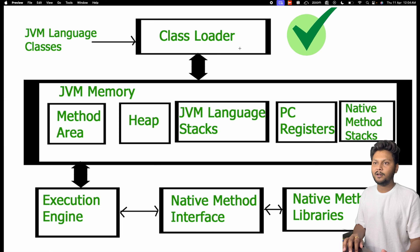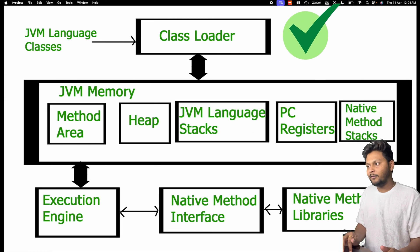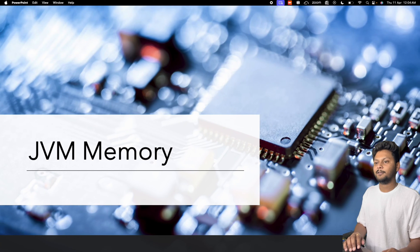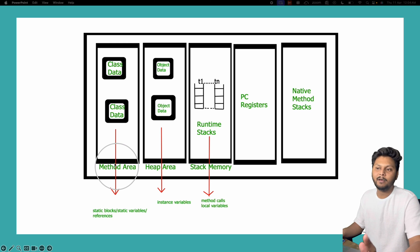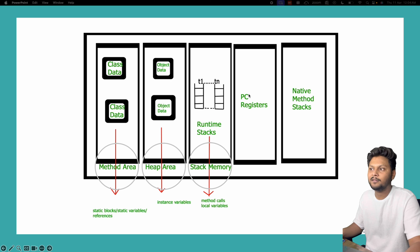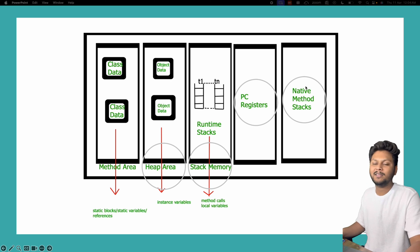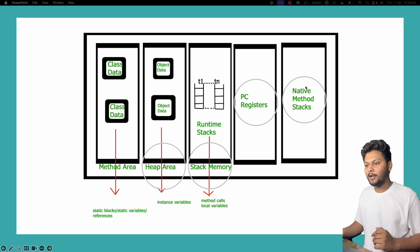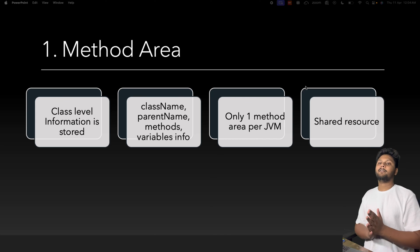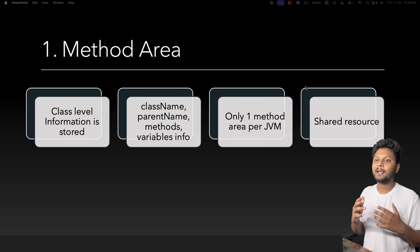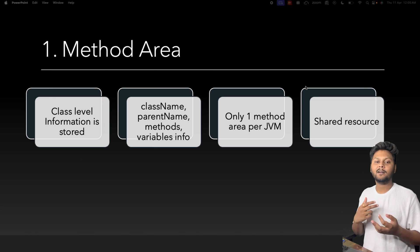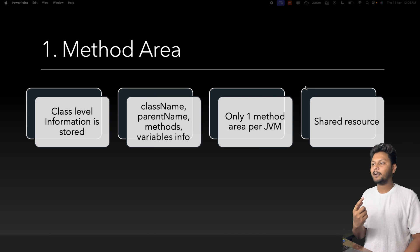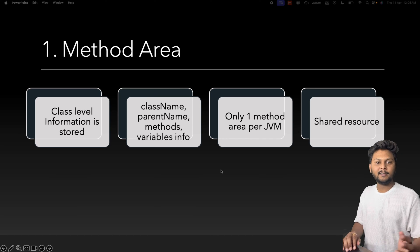Now we move to JVM memory. There are five different types: method area, heap area, stack memory, PC registers, and native method stack. Let's go through them one by one. Method area stores class-level information — class name, parent name, method and variable info — and there is only one method area per JVM. It is a shared resource.